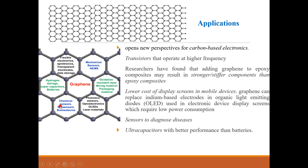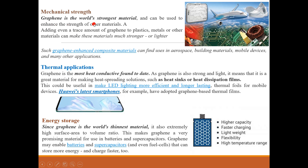Graphene is the world's strongest material, and you can mix it into other things to make them stronger. For instance, composites of plastic or ceramics with graphene become much stronger. Graphene-enhanced composite materials can be used in aerospace, building materials, and mobile devices. It also has excellent thermal conductivity, enabling thermal applications such as heat sinks. LEDs can also be prepared using graphene-based thermal films.